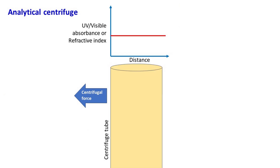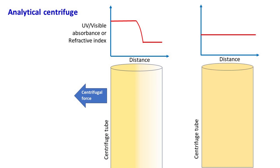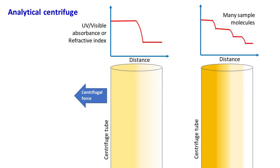As the sample molecules get separated, there is a change in refractive index or absorbance of UV/visible light. This change is detected by the detector and analyzed by the computer, which finally gives information in the form of a graph.